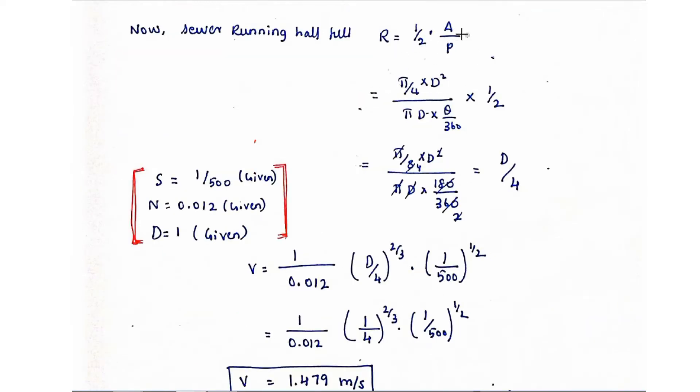Now the area value. Area is equal to pi by 4 into d square and perimeter is equal to pi d into theta by 360 into 1 by 2. Now we are going to solve, pi by 8. The 2 into 4 is equal to 8.